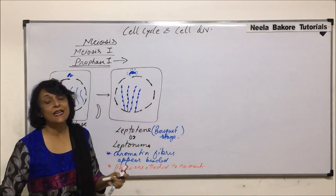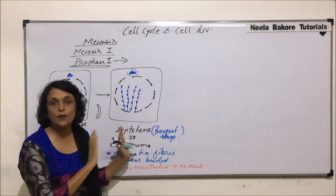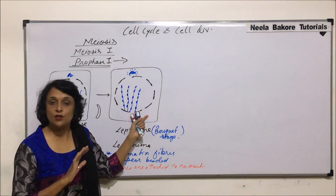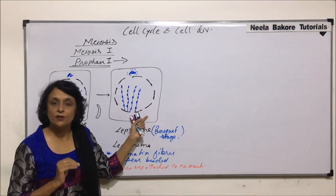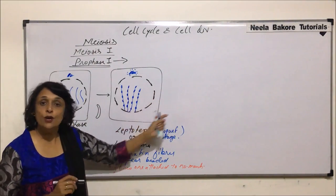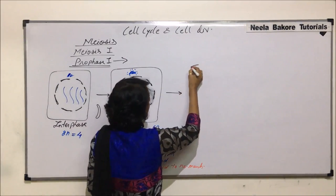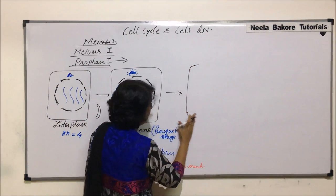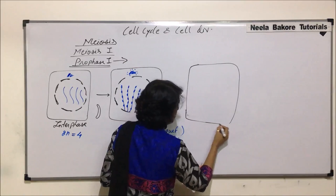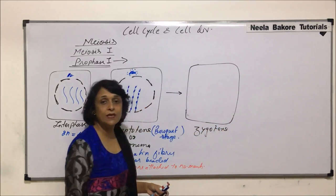In leptotene: the nuclear membrane is intact, the centriole is where it was, and when we say the nuclear membrane is intact that means other membranous structures — endoplasmic reticulum, Golgi body — are also intact. Now this cell enters the next stage, which is zygotene, also known as zygonema, and there are going to be some important changes here.